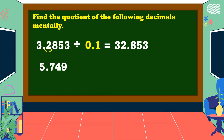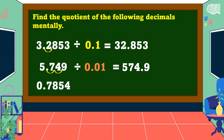Another example: five and seven-hundred-fourteen-thousandths divided by one-hundredth. In dividing decimals by one-hundredth, move the decimal points two decimal places going to the right, and the answer is equal to five hundred seventy-four and nine-tenths.